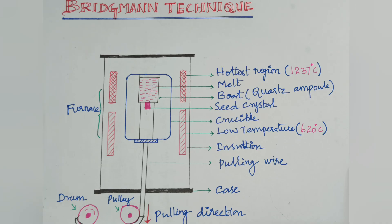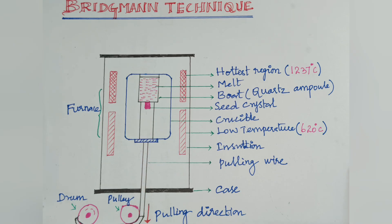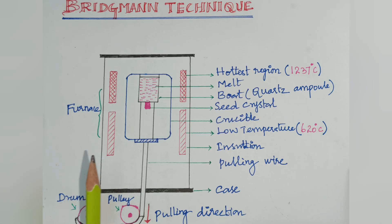The advantages of the Bridgman technique are that it is fairly simple and low cost. Cost-wise it is very small and a very simple method when compared to the Czochralski method, because in the Czochralski method the seed crystal is very difficult to prepare. But in the Bridgman method, polycrystals are used and we can still get a single crystal. The melt composition can also be controlled during the growth.